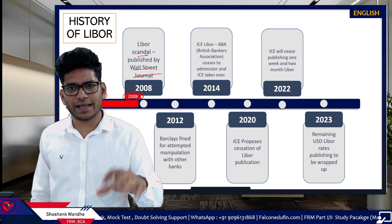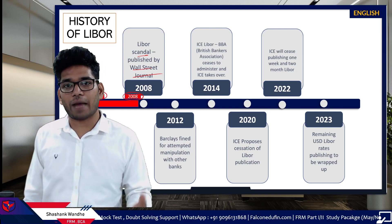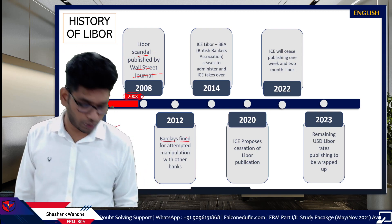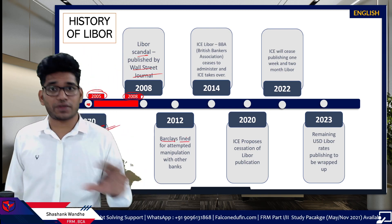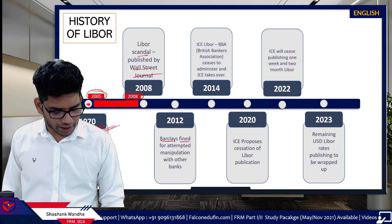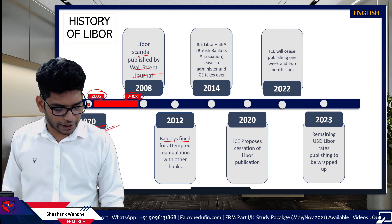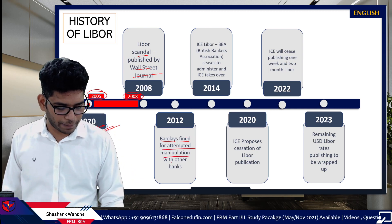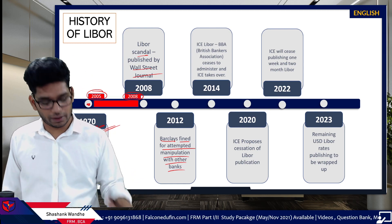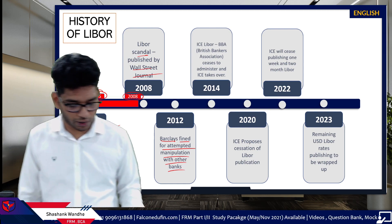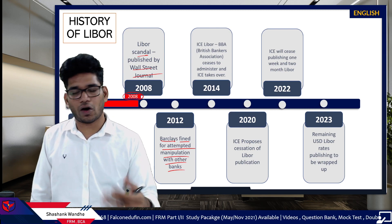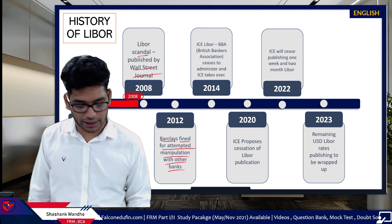There were other participant banks, but Barclays was the main participant who orchestrated this particular scandal. That's why Barclays was fined for the attempted manipulation along with the other banks. Other banks were also fined, Barclays was fined, and the CEO got jailed.